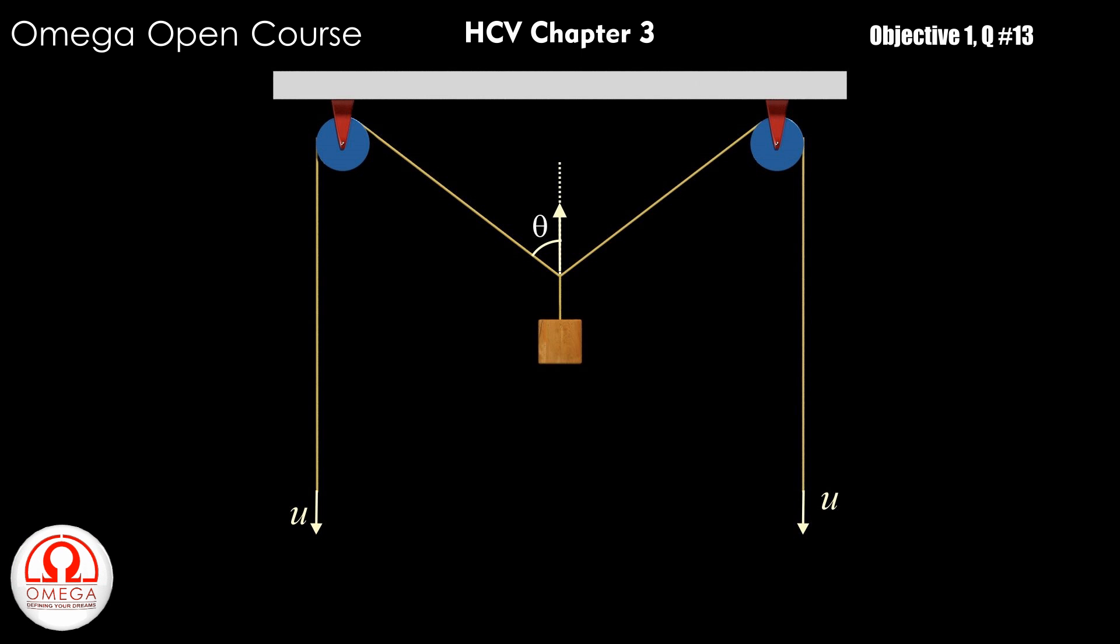Let the velocity of the point where the block is attached to the strings be v. The block will move with the same speed as this point moves. As you can see, when the strings are pulled, this point moves upward.